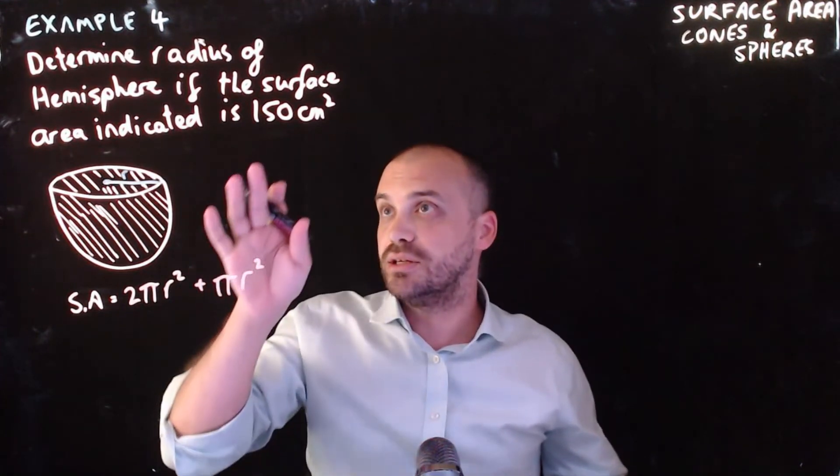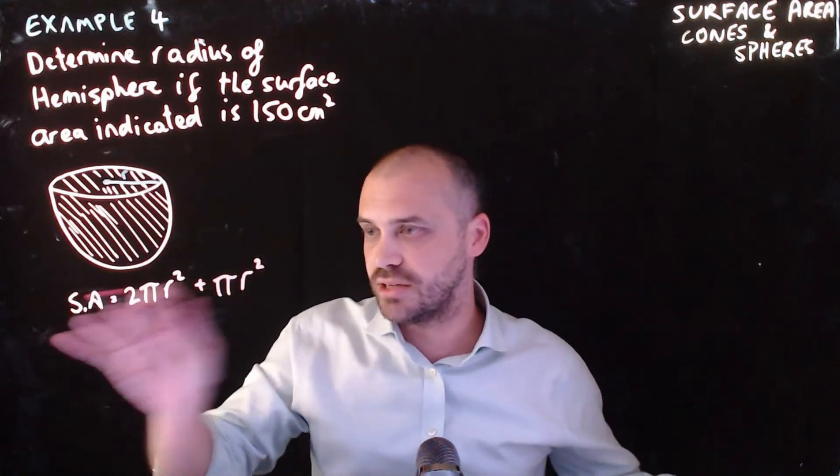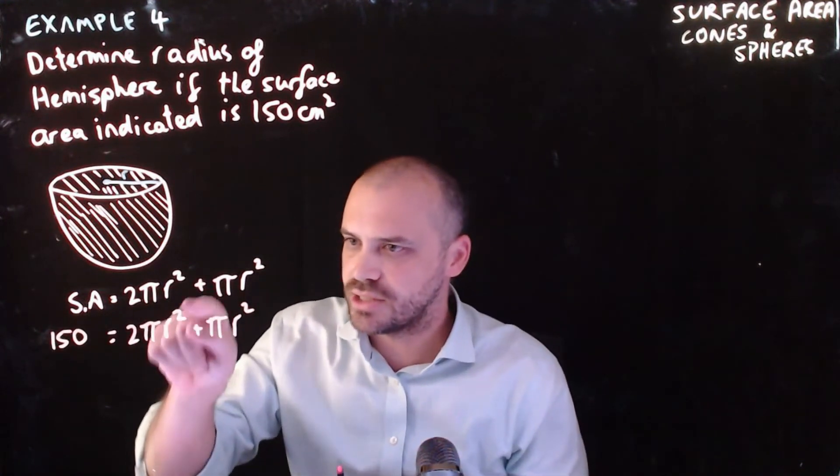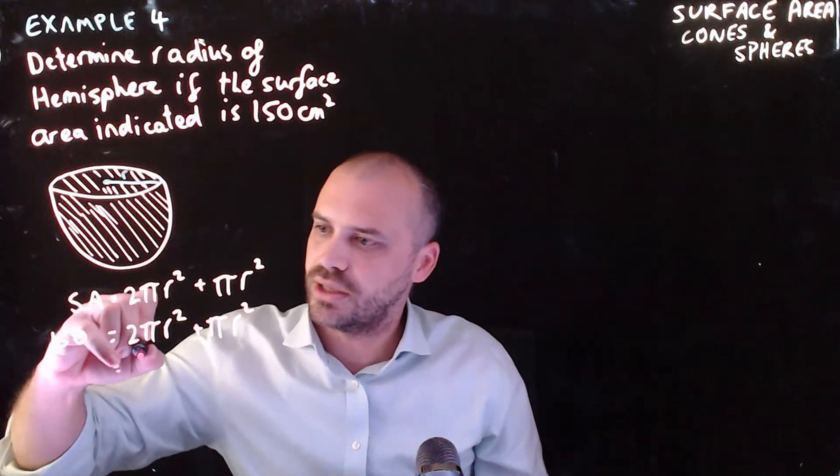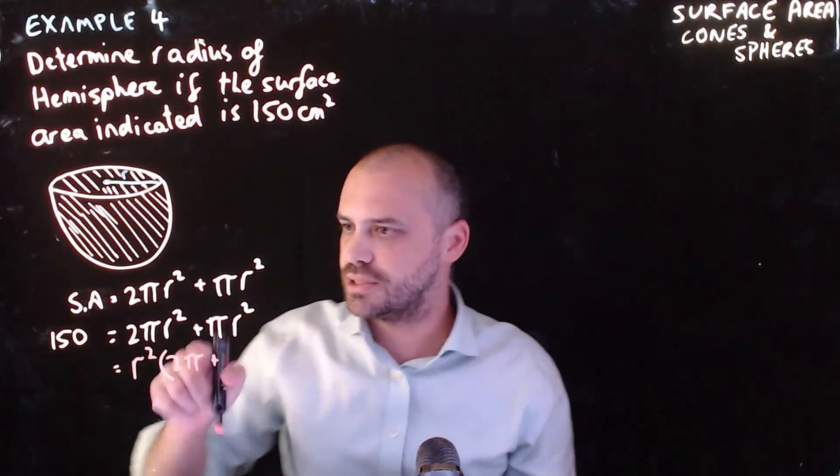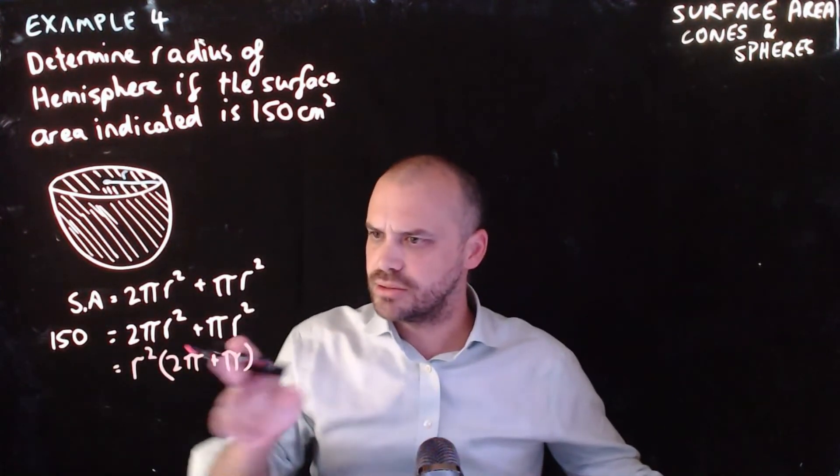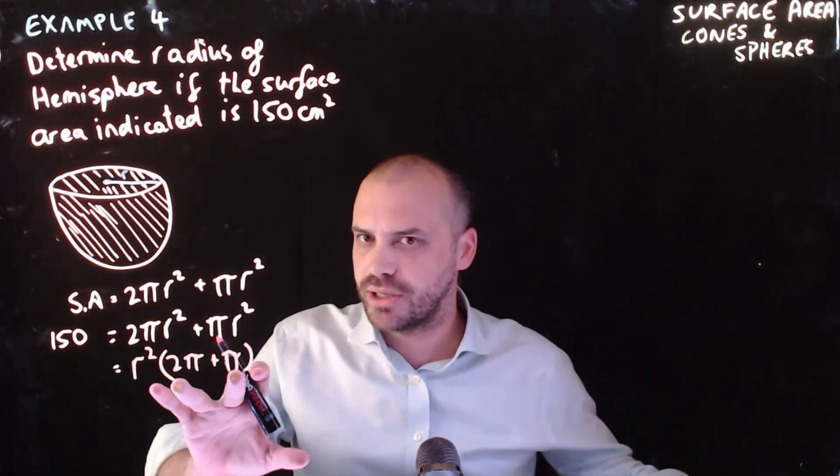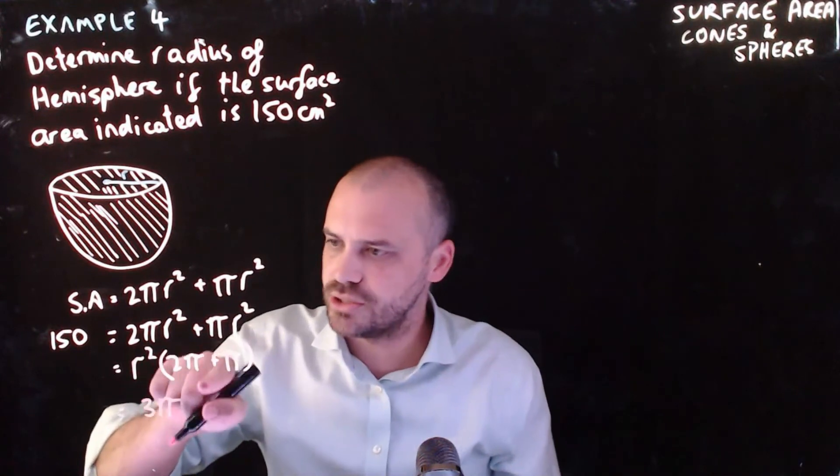Now, of course, we know that the surface area of this object is 150 centimetres squared. So let's sub that in for surface area. And now I need to get r by itself. But the problem is that I have this r squared here and this r squared here. So if I factorise this side, I'll get r squared bracket 2 pi plus, and then what's this bit? Pi, 2 pi plus pi. All right. Wait a minute. 2 pi plus pi, that's 3 pi. So I can just make that bracket 3 pi. And so what I'm going to have is 3 pi times r squared.